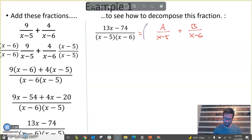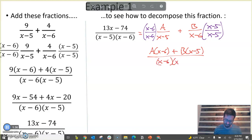What I'm going to do now is multiply by that form of fancy 1. So I'm going to multiply by x minus 6 over x minus 6 over here on the left. And over here, I'm going to multiply by x minus 5 over x minus 5. By doing that, my numerator becomes A times x minus 6 plus B times x minus 5 all over x minus 6 times x minus 5.